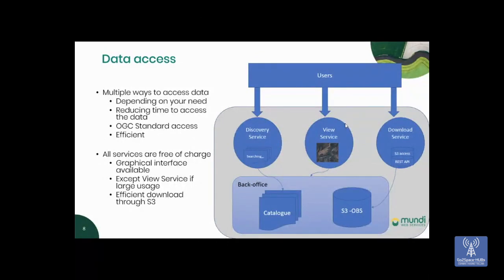The download service is available for free. In the middle, the view service is very handy — it lets you extract only the part of the data you need for a specific area and time range. You can say 'I want this area over this time range' and the service sends only that data. This is convenient for time series analysis, tracking evolution over time, or focusing on a specific event, saving time by downloading only what you need.